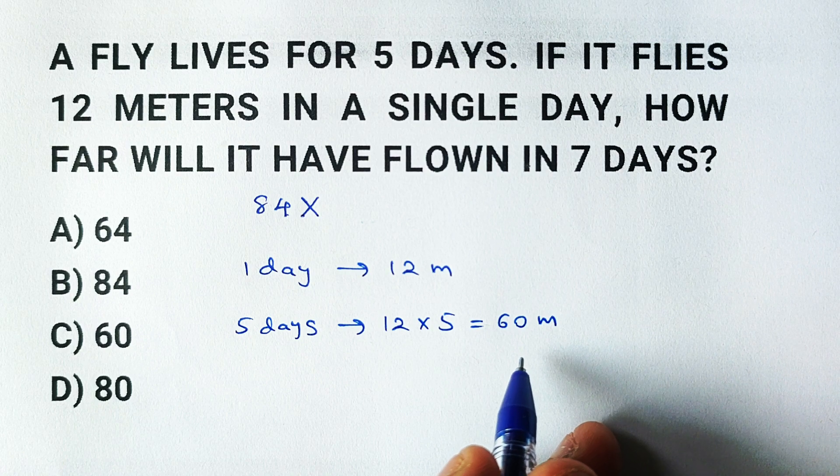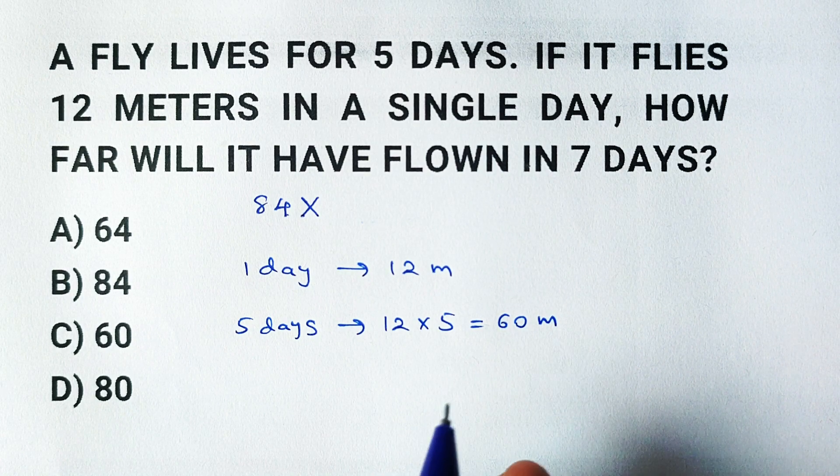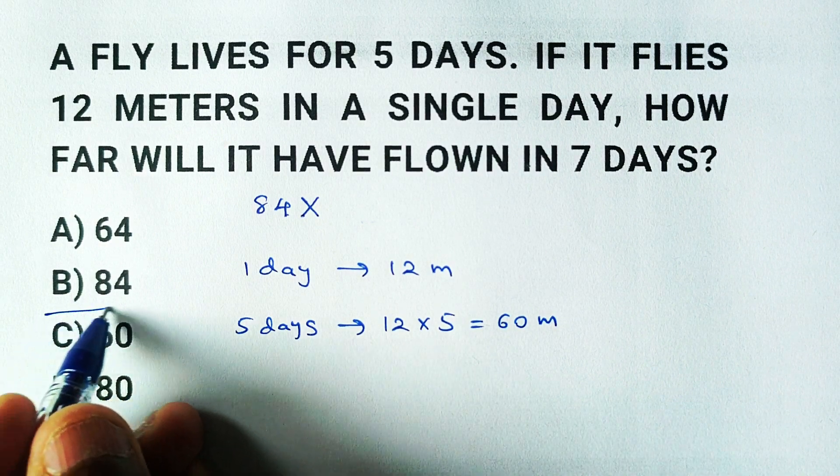This means the total distance the fly can fly during its lifetime is 60 meters. So the correct answer is C: 60.